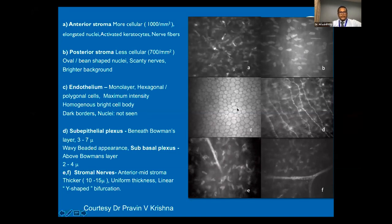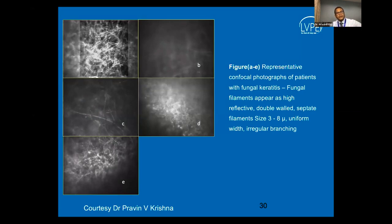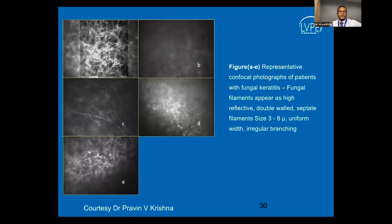In confocal images from a patient with fungal keratitis, fungal filaments appear as highly reflective, double-walled, septate filaments. The dimensions are 3 to 8 microns, similar to the sub-basal nerve plexuses. They show irregular branching of uniform width, and when we see this characteristic picture, we are reasonably sure that we are dealing with fungus as the probable etiologic agent.